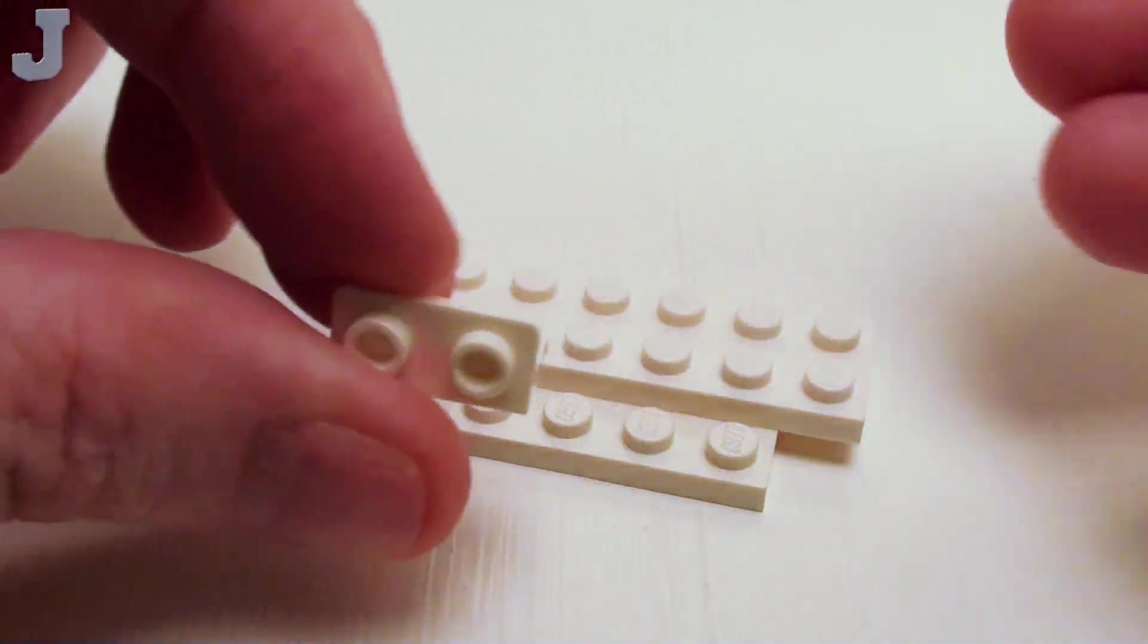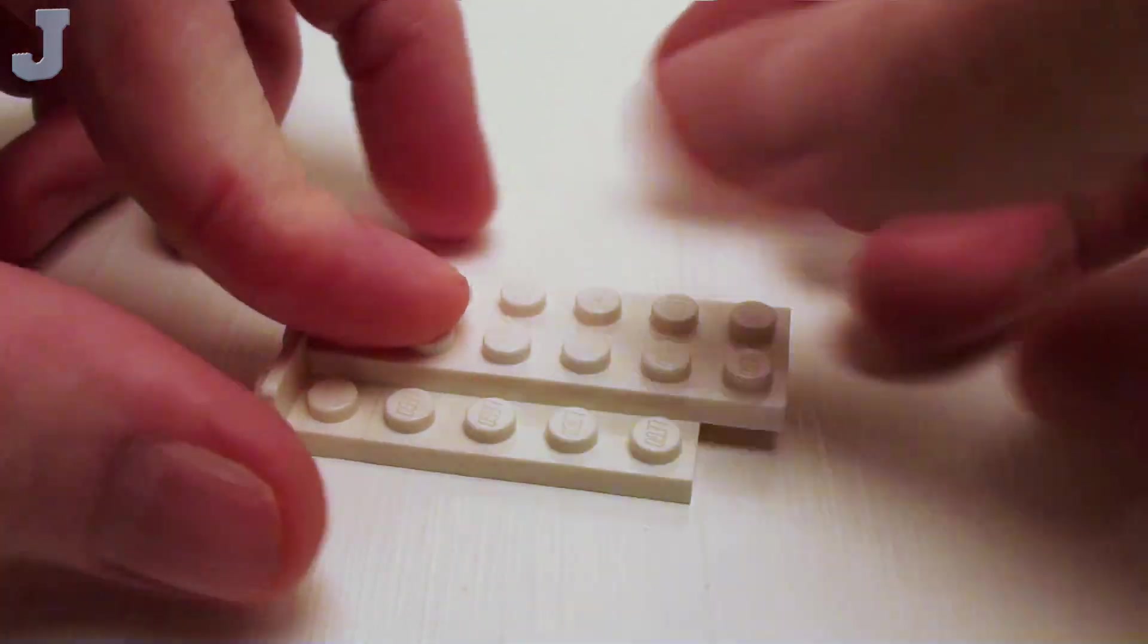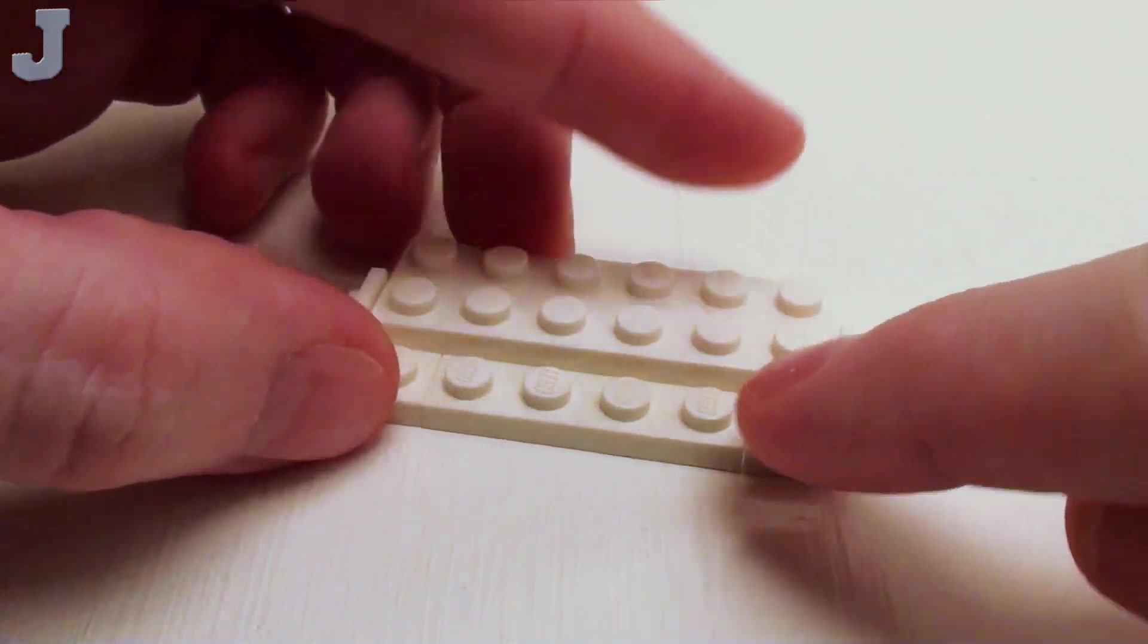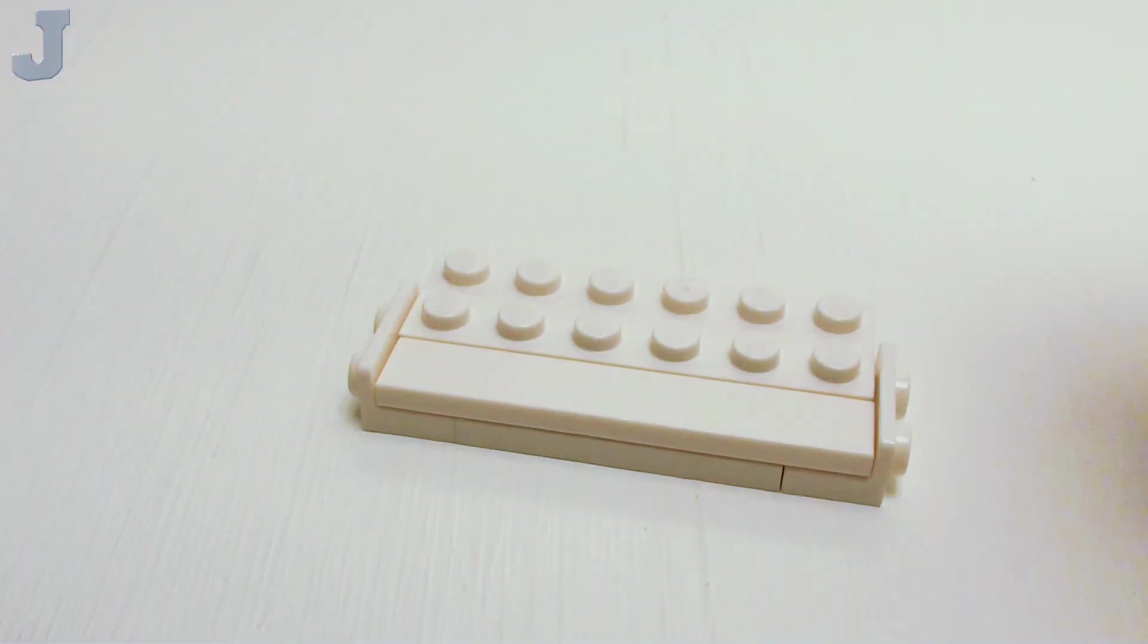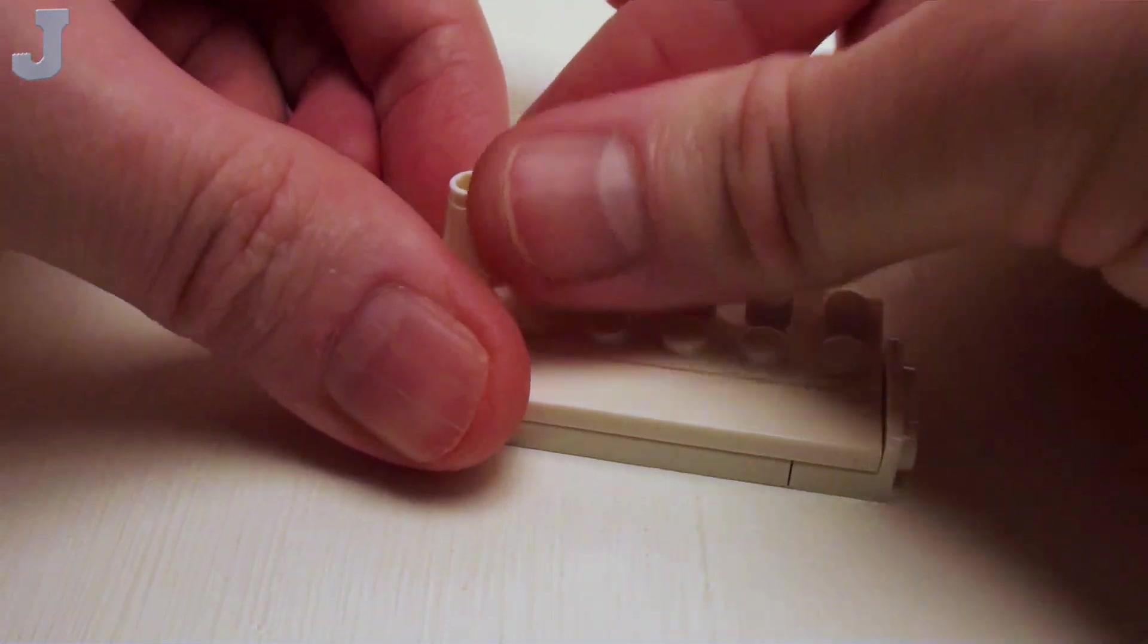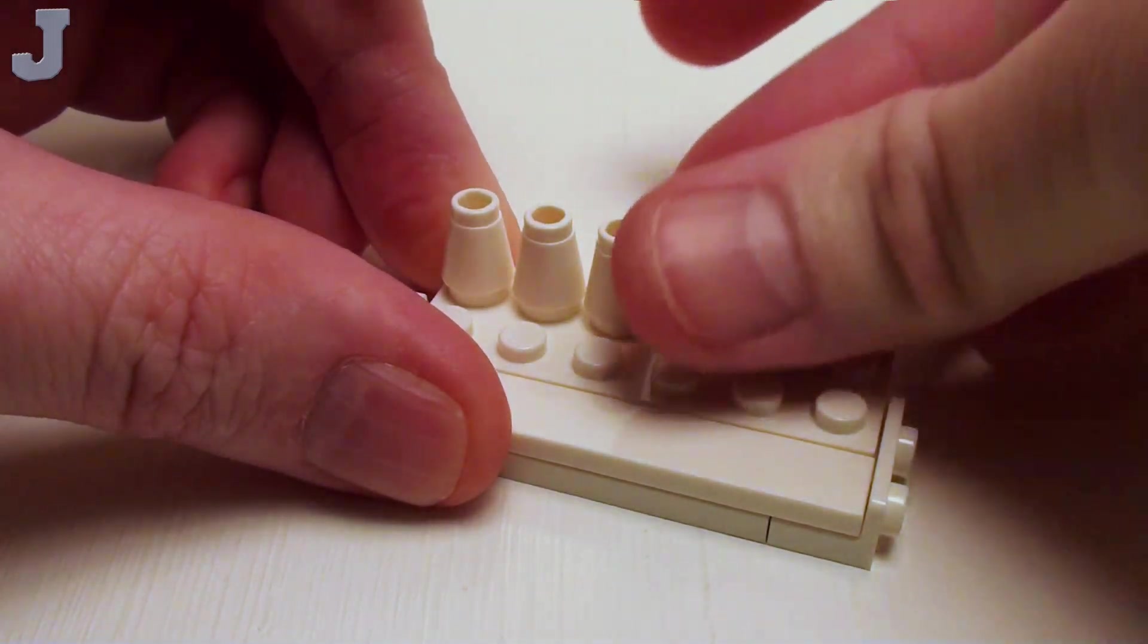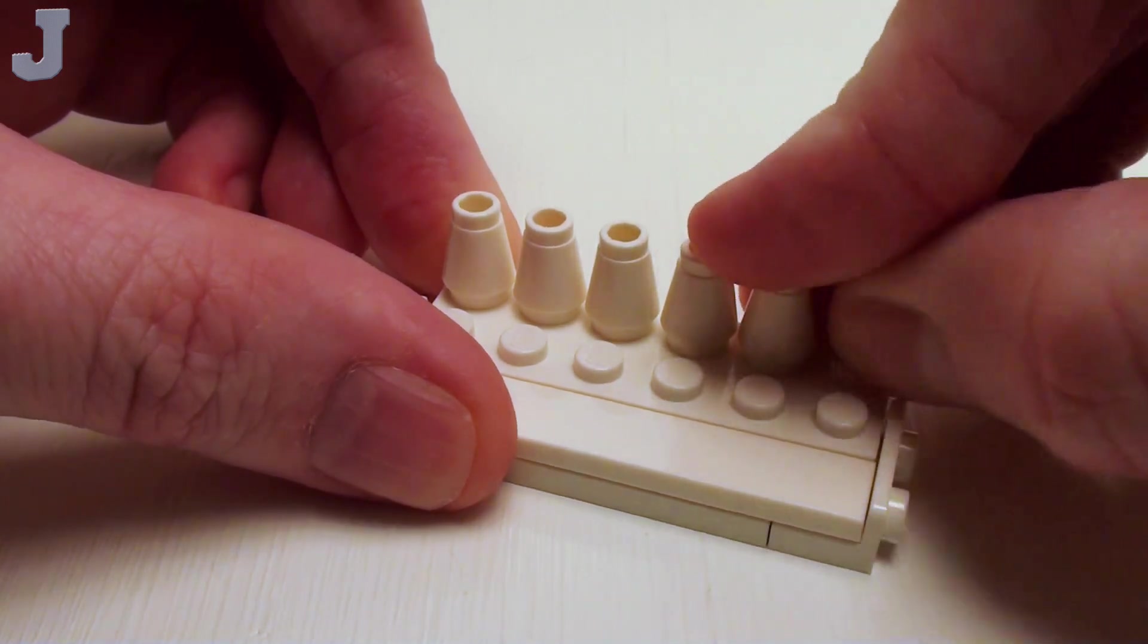I'm going to slide in a pair of 1x2 by 1x2 upward angular plates in these two areas. And then I'm going to fill in this void with a 1x6 flat tile. In the back, six 1x1 nose cones. These are going to form the back of our bench.